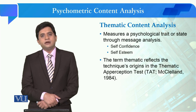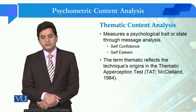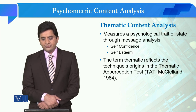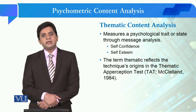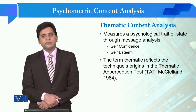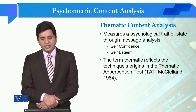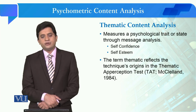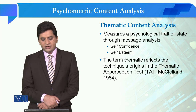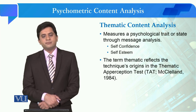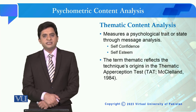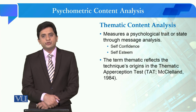The second type is thematic content analysis. Thematic content analysis measures a psychological trait or state through message analysis. In this, we talk about a particular state or trait — for example, if you are studying an individual, from their communication and messages you try to find out what their self-confidence is like, what their self-esteem is, and what their emotional quotient is. This type of content analysis is basically derived from the Thematic Apperception Test, which is a proper psychological test, and on that basis this type of content analysis was developed to examine psychological traits among individuals.